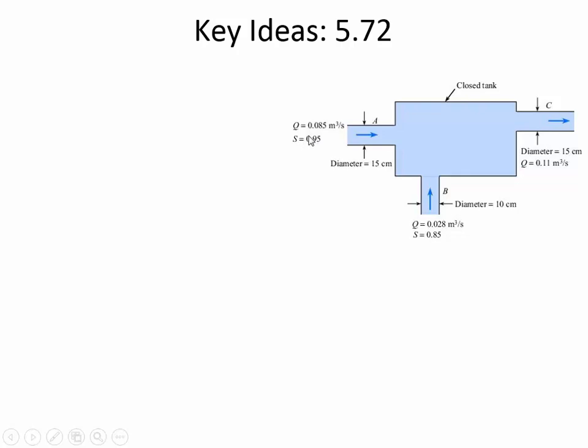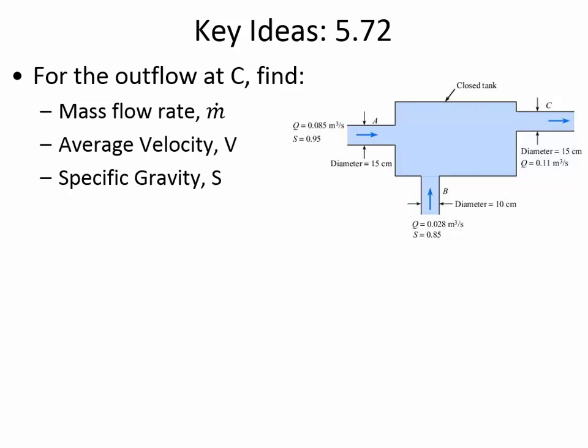This is a unique situation because the fluid coming in isn't water — it's two different fluids, and we don't necessarily need to know what they are, but the unit weights are provided. At A, there's a volumetric flow rate defined along with the specific gravity. At B, a volumetric flow and specific gravity are also given. Then there is outflow at C, and what they want you to calculate at C is the mass flow rate, the average velocity, and the specific gravity of that mixture.